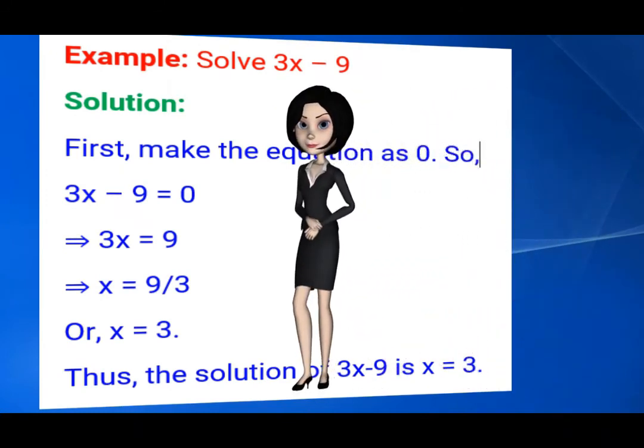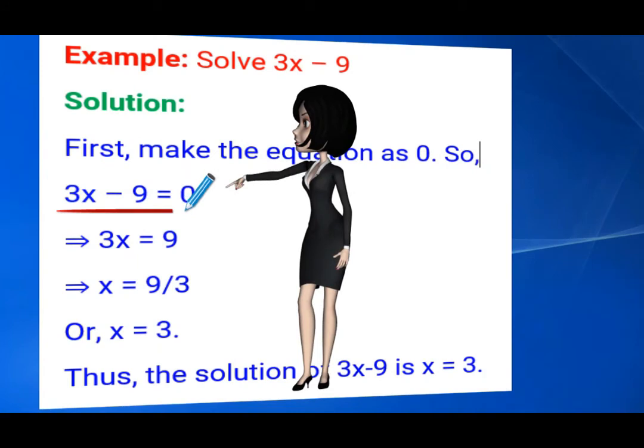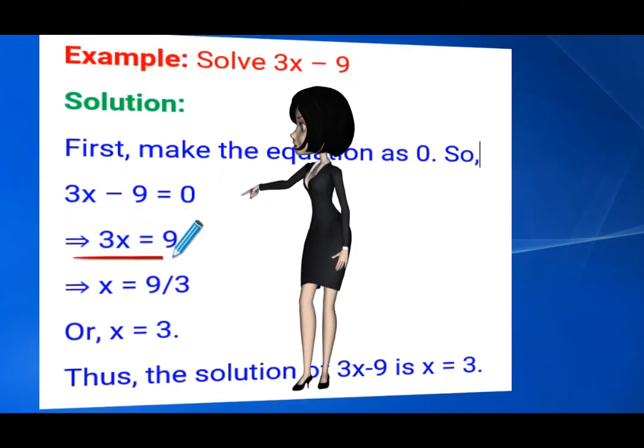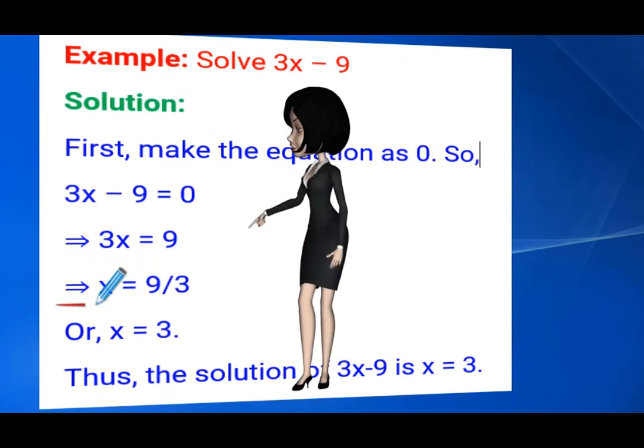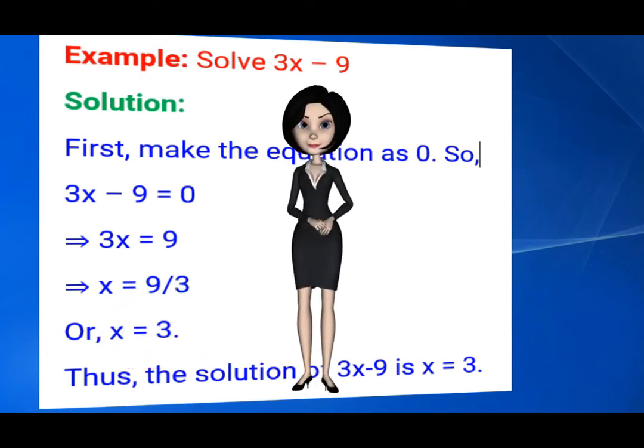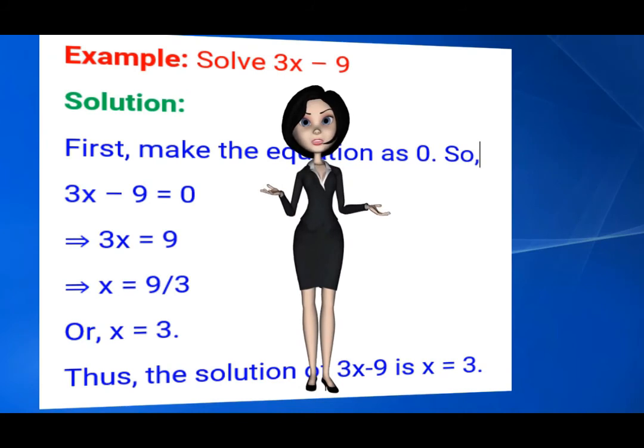First step, you make the equation as zero. Then add 9 on both sides. You will get 3x equals 9. Divide the equation by 3 on both sides. You will get x equals 9 by 3, which means x equals 3. Finally, the solution of 3x minus 9 is x equals 3.